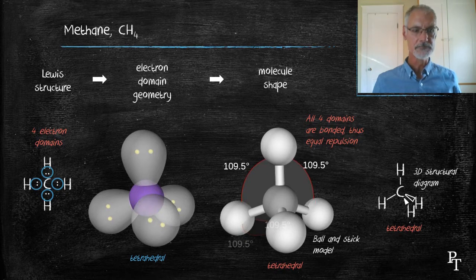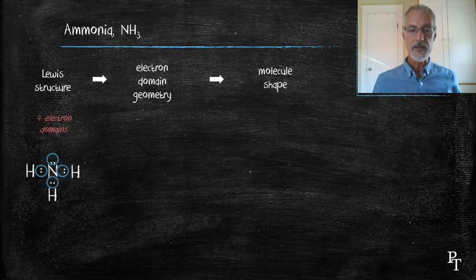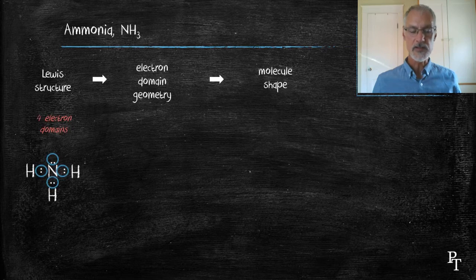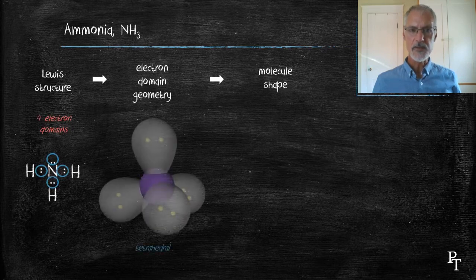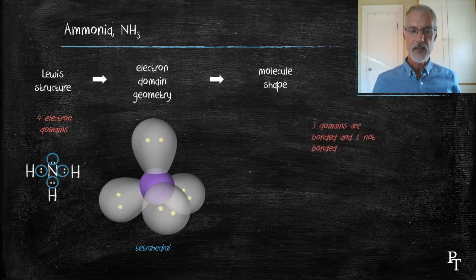Let's take a look at ammonia. Here's the Lewis dot diagram. I identify again there are four domains. That means I'm going to begin with a tetrahedral. However, what's a little bit different in this case is three domains are bonded and one is not. As a result, I end up with this particular shape.